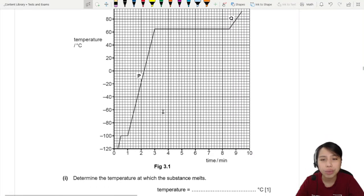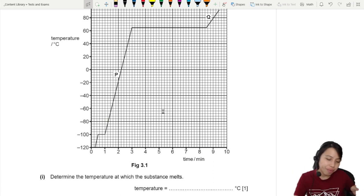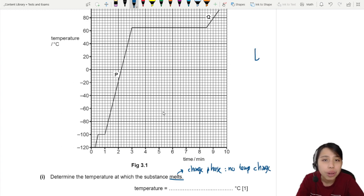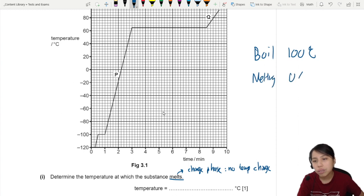This beautiful graph, zigzag going up. And we need to determine the temperature which the substance melts. We're going to assume that your substance has only solid, liquid, gas. So how do we know where does melting occur? Here's a tip. When the object is changing phase, there will be no temperature change when that is happening.